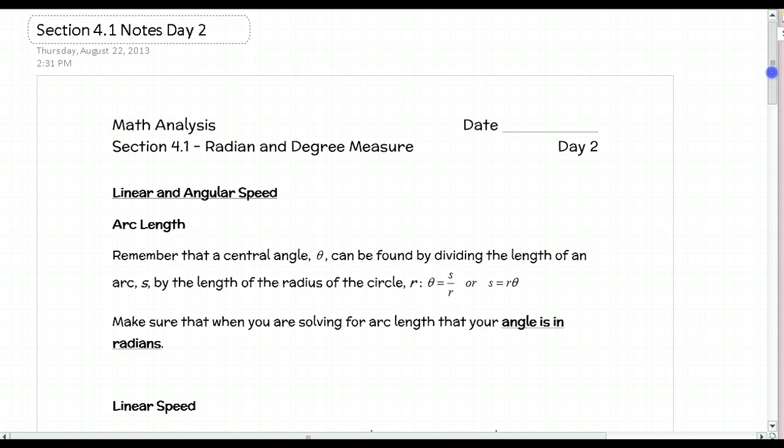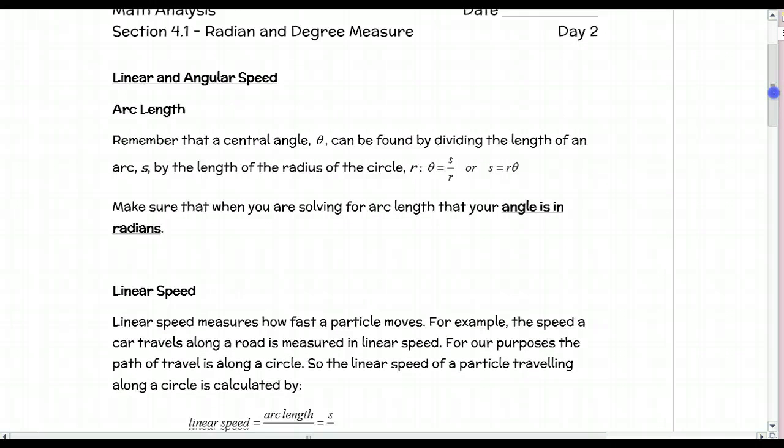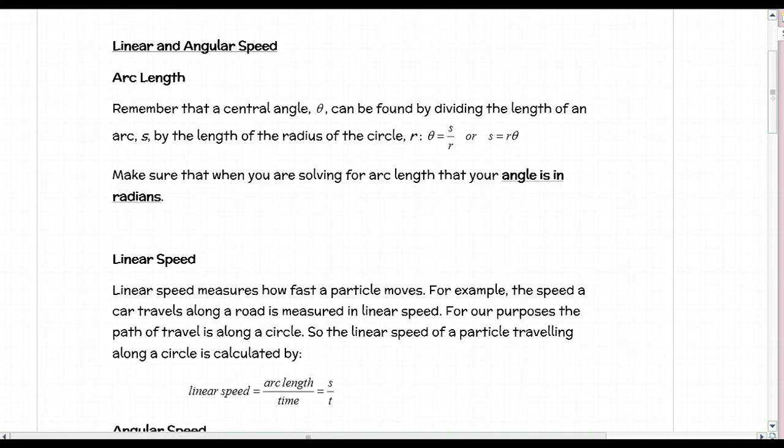Today we're talking about linear speed and angular speed, but first we'll review arc length. Arc length is a piece of the circumference. If I have a circle and pick two points on it, this part is the arc length s, and we have radius r.